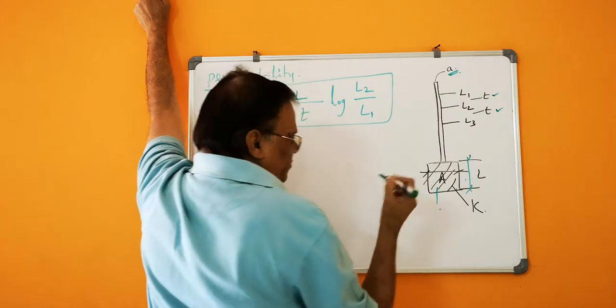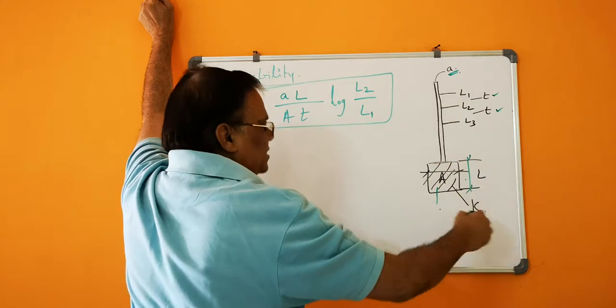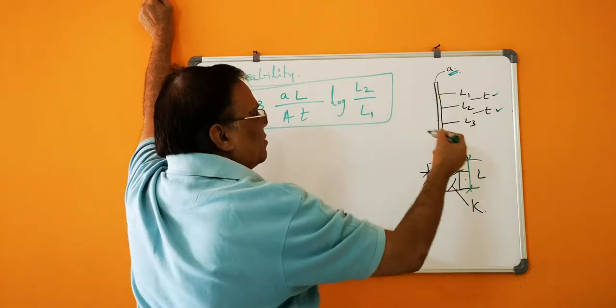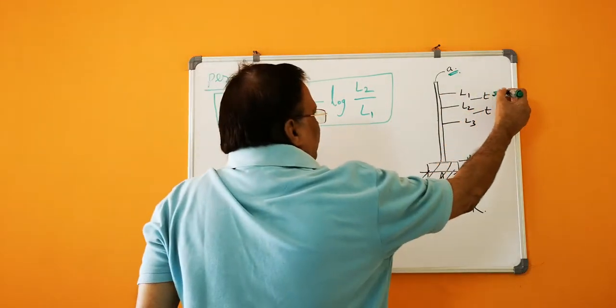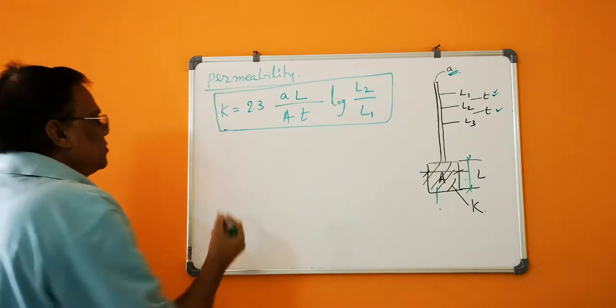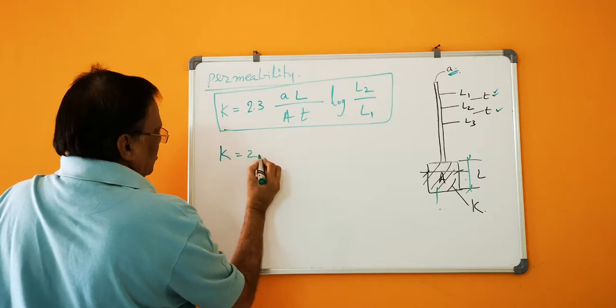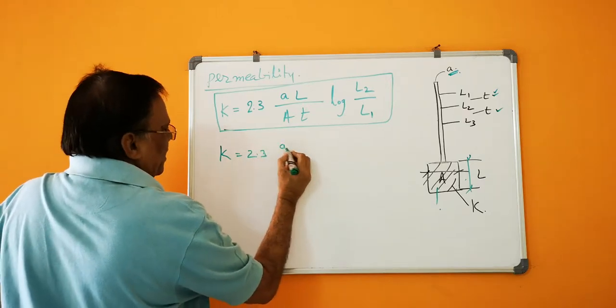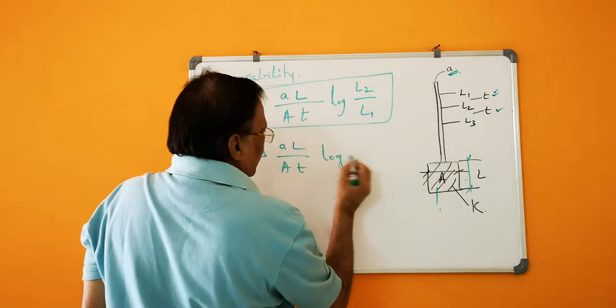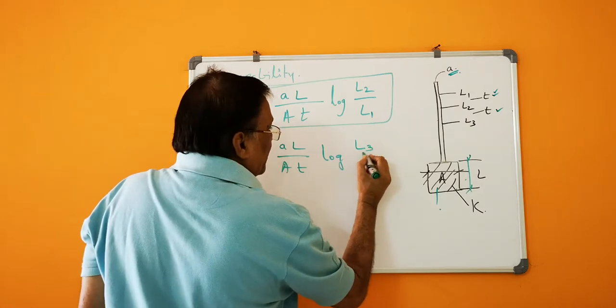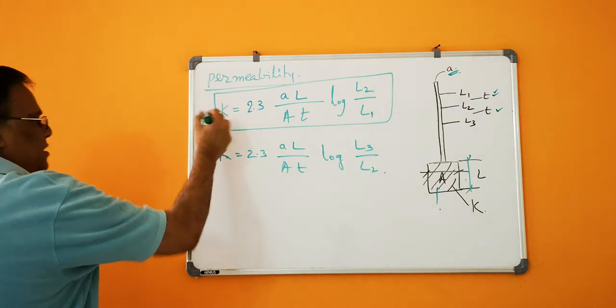The sample is the same and the standing pipe, everything is constant. Everything is kept constant but L1 by L2 and L2 by L3 in the same time - time is also kept constant. So it is given that K is equal to 2.3 A L by A into T log L3 by L2. Both are the same because these two are the same.